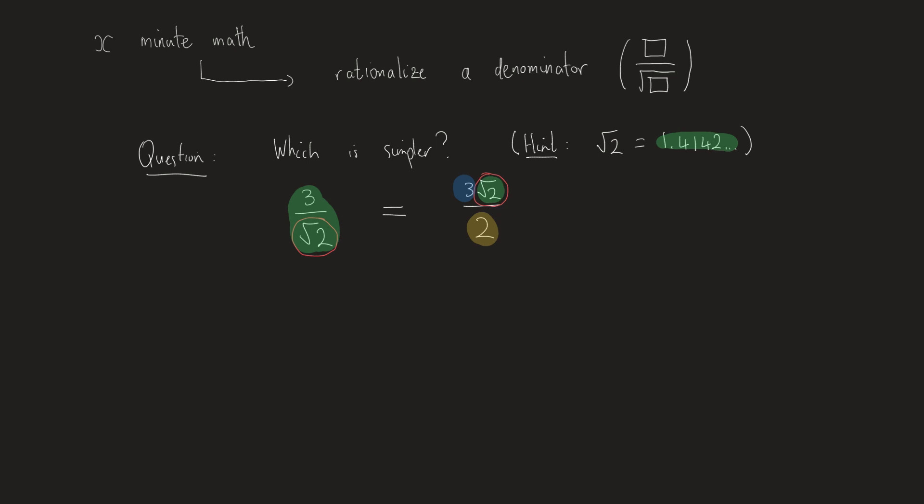So often we'll think of that right-hand side as being simpler because that square root, that irrational number, is not in the denominator, it's in the numerator. So often what we're going to do is try to what we call rationalize the denominator. We want to take the expression where the denominator is an irrational number and we want to rewrite it where the denominator is a nice rational number.